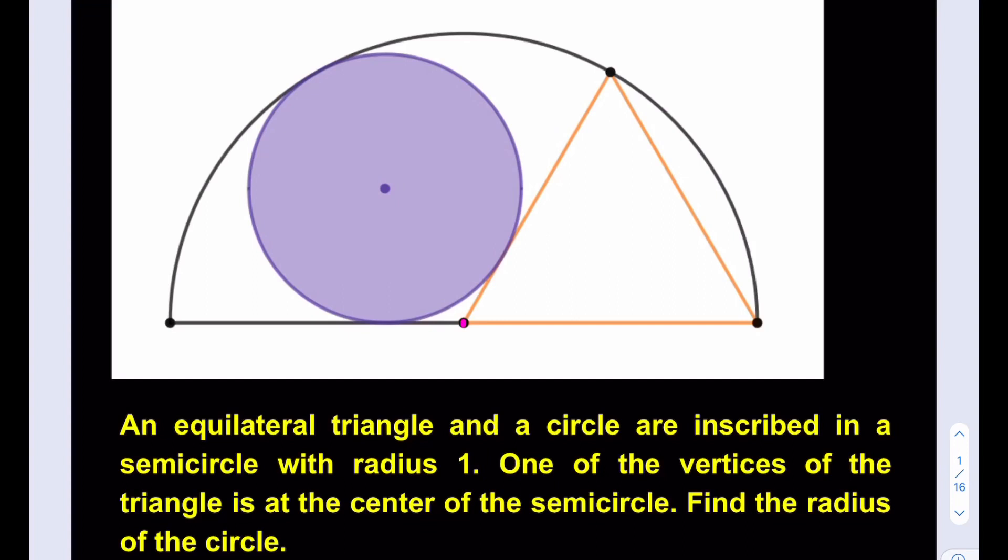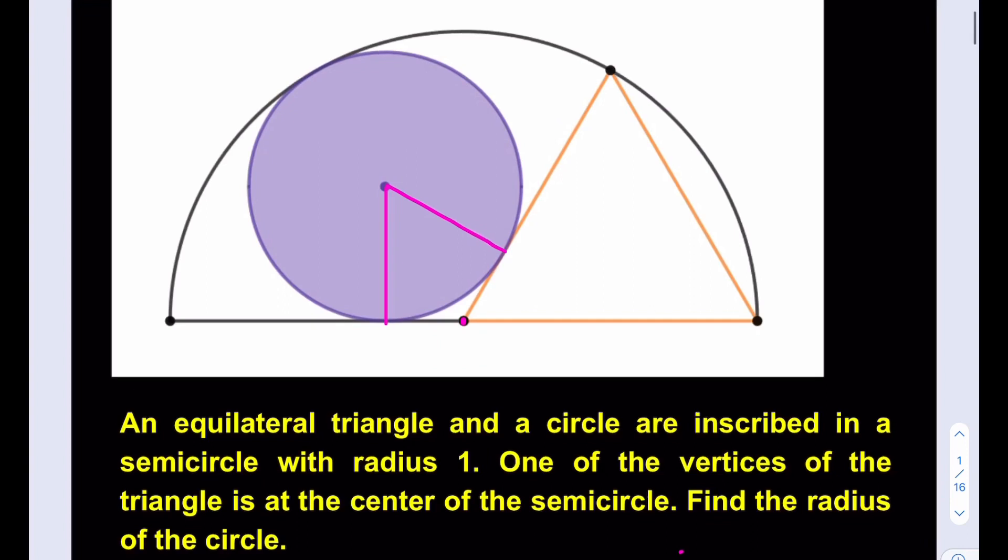I'll make some connections here. Let's drop a perpendicular here, this way and that way. Those are perpendiculars. Let's draw the bisector because that's going to be a bisector. Now, let's see what we have.